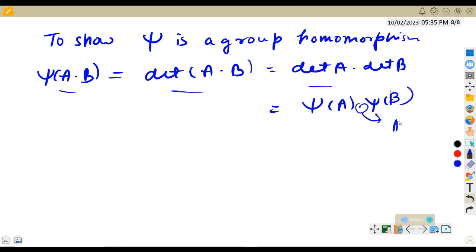This is product in R. So indeed, phi is a group homomorphism. You can check it is well defined and other properties.